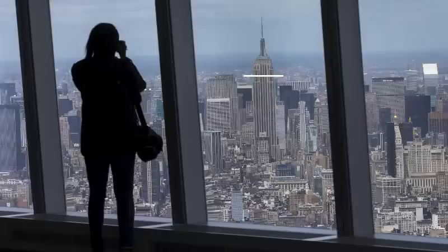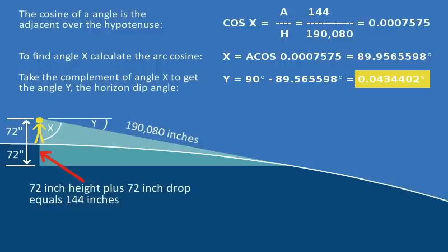Skiba is right that the horizon will always be below eye level, but the amount is very, very tiny — especially at the low heights we ordinarily experience. Sometimes in science, our intuition alone is not good enough. It doesn't seem like the angle would be that tiny, but it is. Every time Skiba says 'looking down,' think of the critical number he leaves out: you're looking down by 4% of 1 degree.